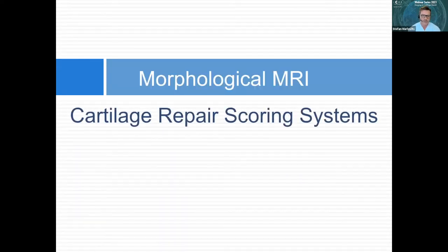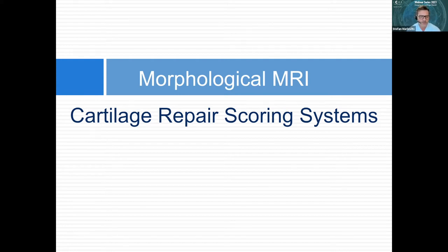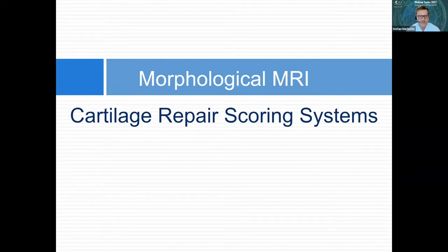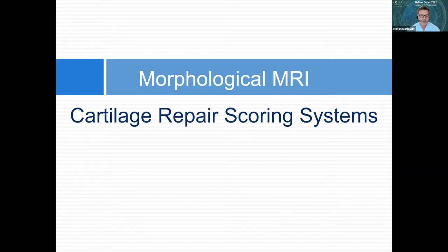Coming back to morphological MRI and cartilage repair scoring systems: why do we need these? We need scoring systems to compare our procedures, to validate them, and ultimately to have scores which we can present to regulatory bodies — the FDA or EMA — to justify new repair modalities.